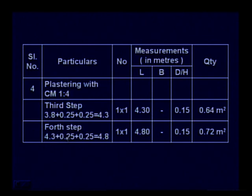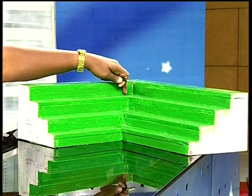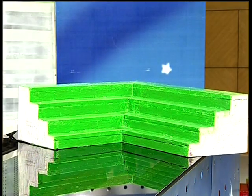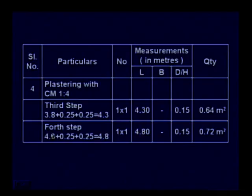For the fourth step, again 0.25 and 0.25 are added because the length is increasing in both directions. Therefore 4.3 plus 0.25 plus 0.25 equals 4.8. The 4.8 multiplied with the height 0.15 gives a quantity of 0.72 square meters.